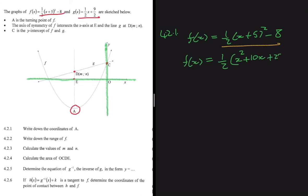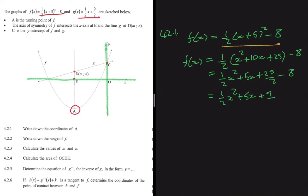Then minus 8. Using order of operations, we multiply out first before subtracting: ½x² + 5x + 25/2 - 8. Now 25/2 - 8 = 9/2. So f(x) = ½x² + 5x + 9/2.